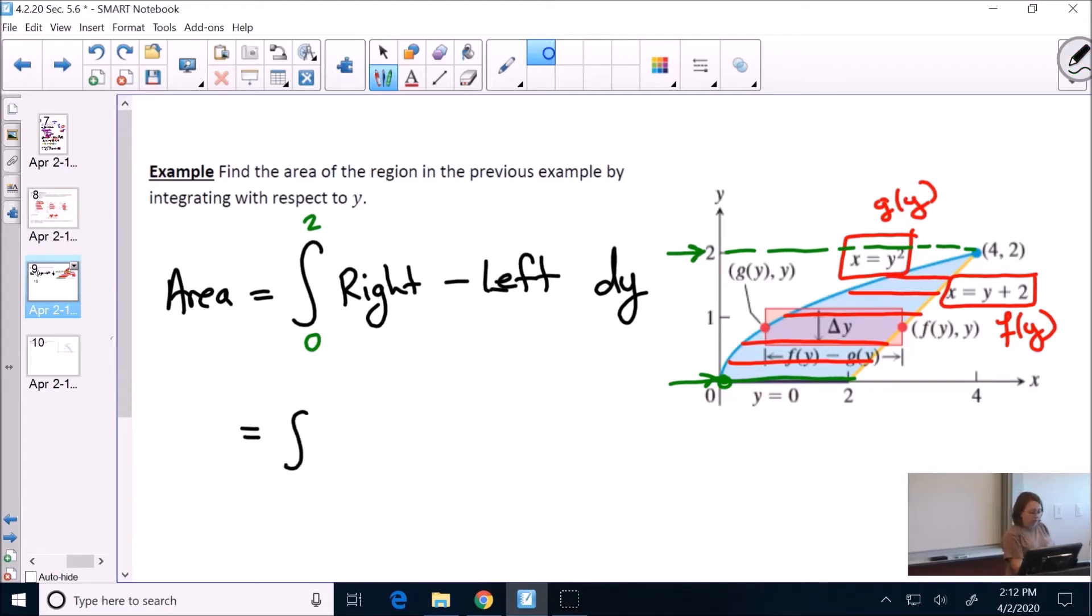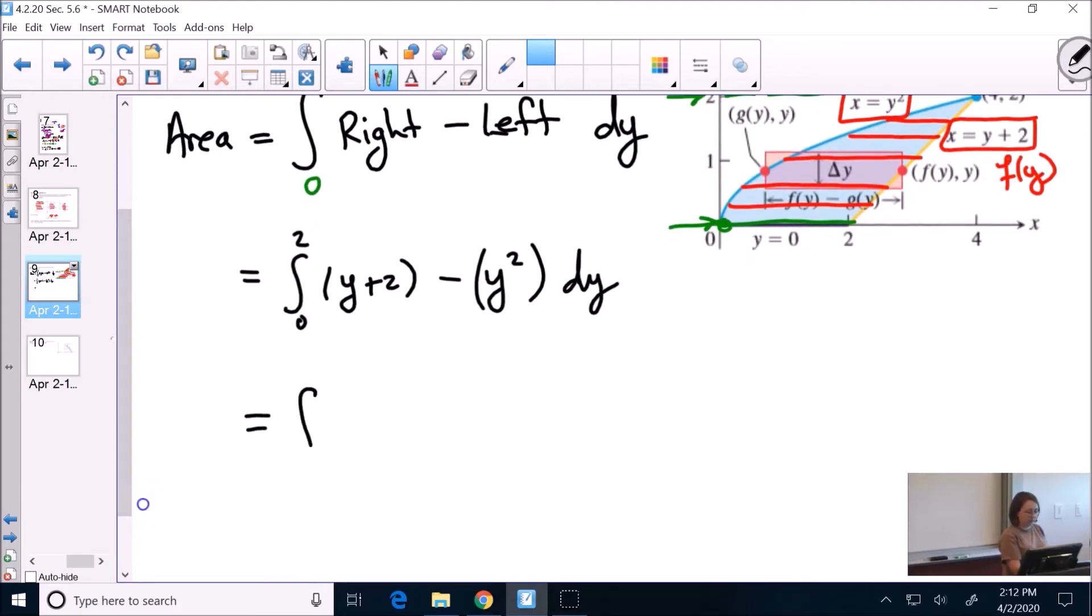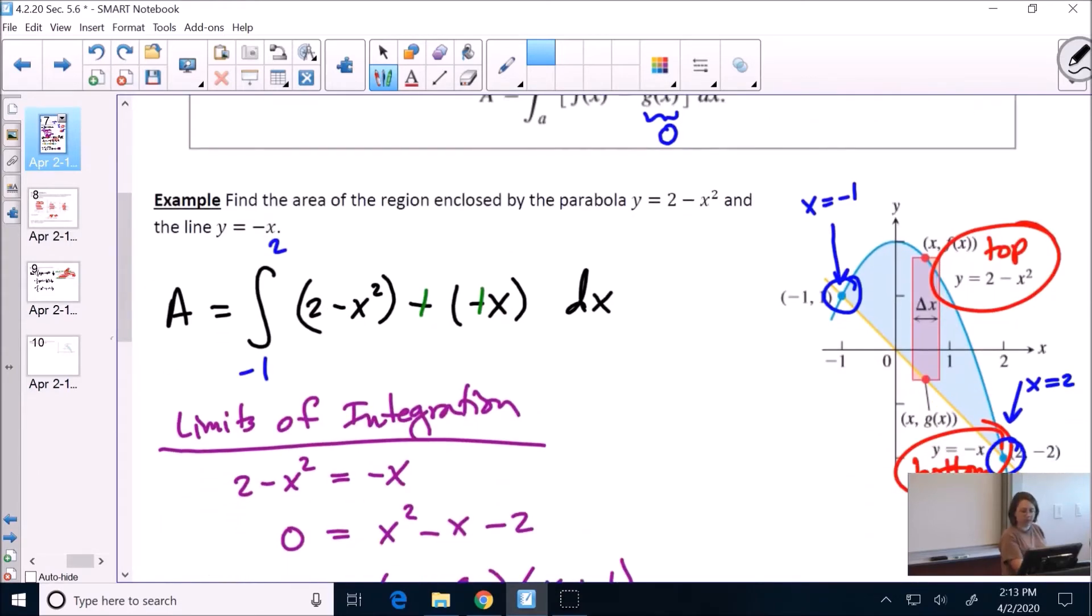Alright, so we're integrating from 0 to 2. Our right function is the yellow, y plus 2, minus the left, the blue, y squared. Oh, we did just do this problem. So equals the integral. So if I put it in order, negative y squared plus y plus 2, 0 to 2. This is the same problem, just in a different spot. We changed our function.